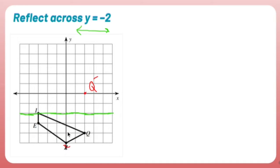Z appears to be 1, 2, 3 units away from the mirror. So 1, 2, 3 units away, Z prime.